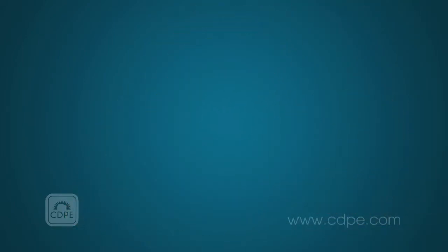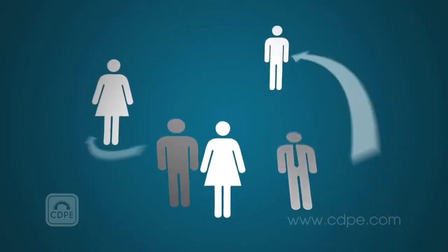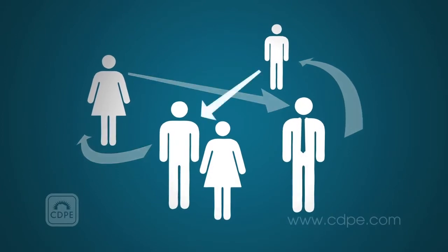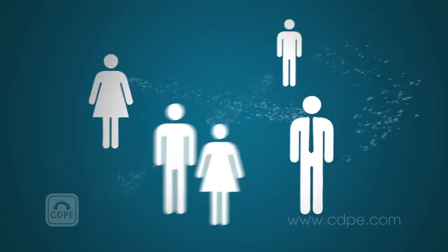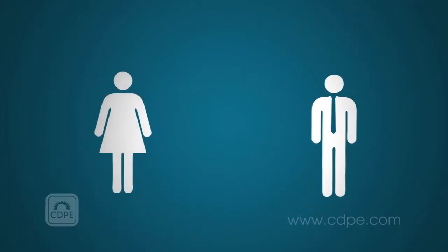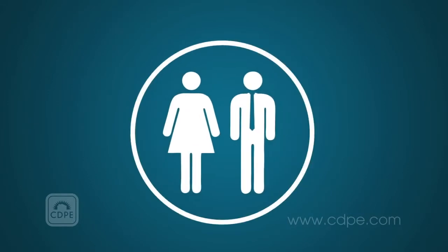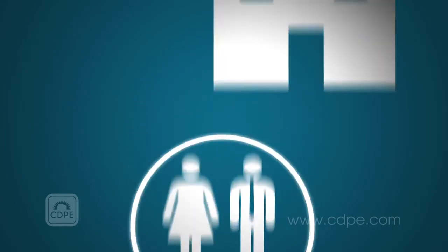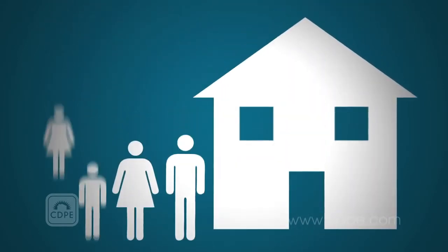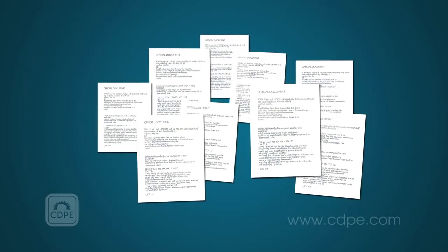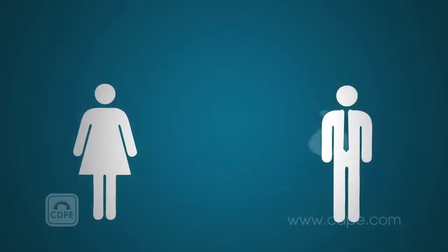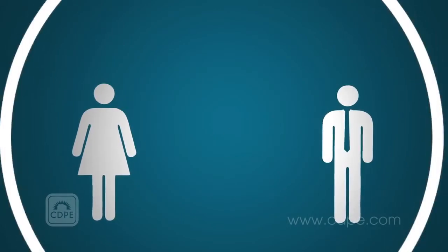Instead, this refers to a relationship between the parties involved. Arm's length means you have no relationship with the other party involved outside of the transaction in question. This includes familial relationships, business relationships, or any contracts or agreements that don't exist in the transaction in question.